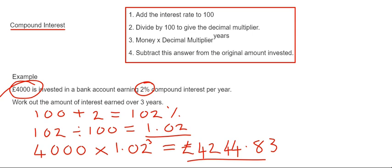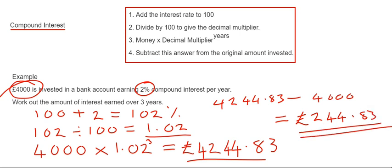We now have to go to step four and we need to take the £4000 off the £4244.83. So step four then is 4244.83 take away 4000. We get an answer of 244.83. This is the amount of interest that we've earned over the three years.